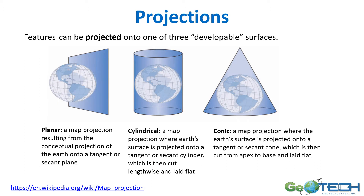Features can be projected onto one of generally three developable surfaces: planes, cylinders, and cones. These three surfaces are the developable surfaces, and we're going to look closer at what happens when you try to develop a flat map from a globe using one of these surfaces.